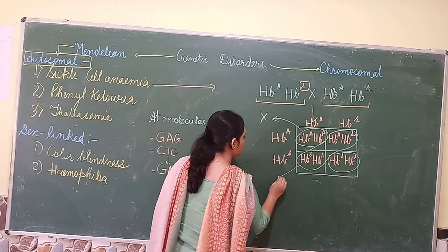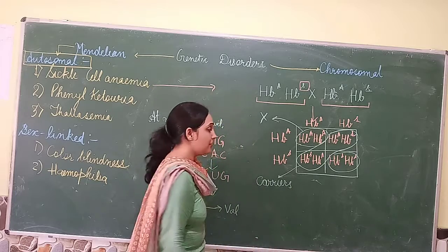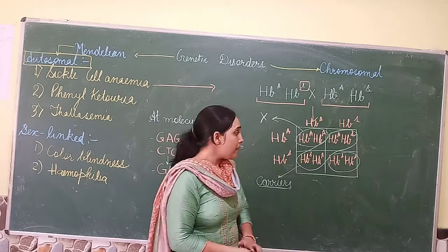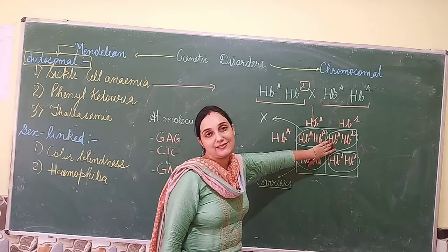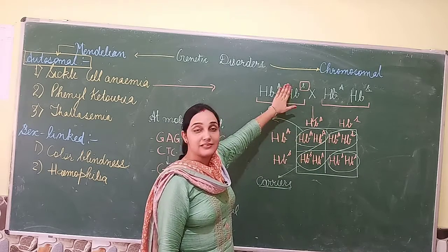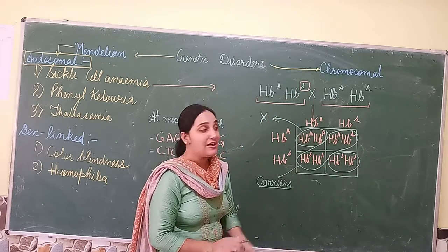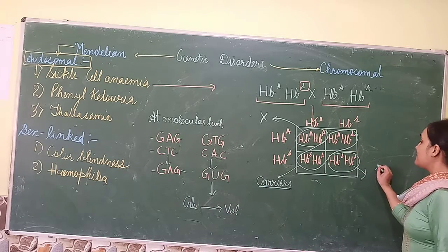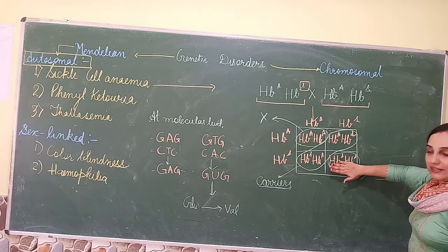In the heterozygous condition, these individuals are carriers. They are carriers, which is why they are not going to express the character. But there is a 50% probability that these heterozygous carriers will pass on the trait for sickle cell anemia to their offspring. The recessive individuals have 100% chances of having sickle cell anemia.